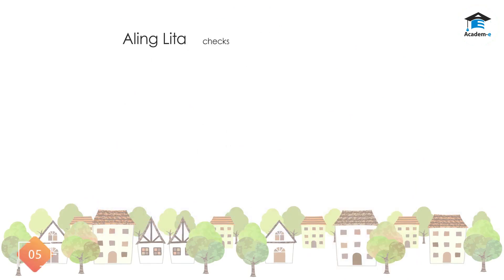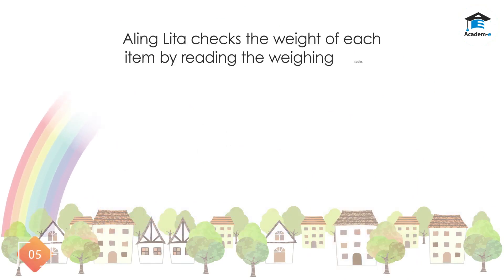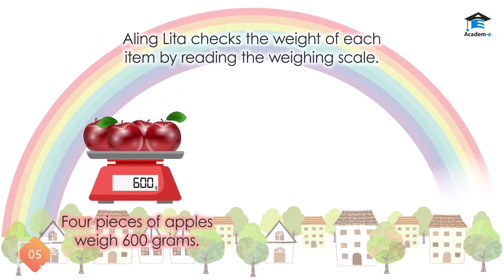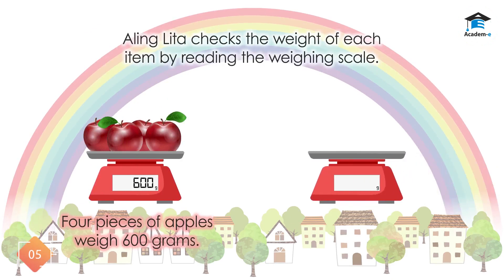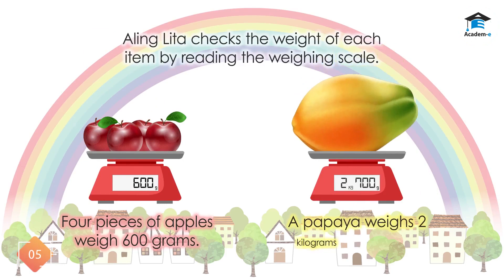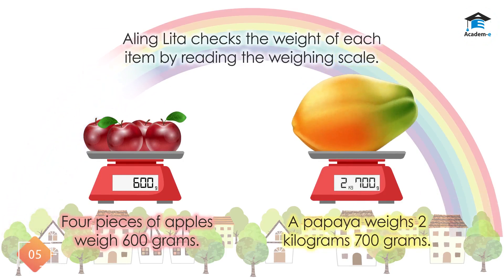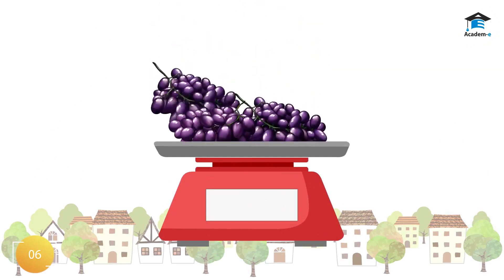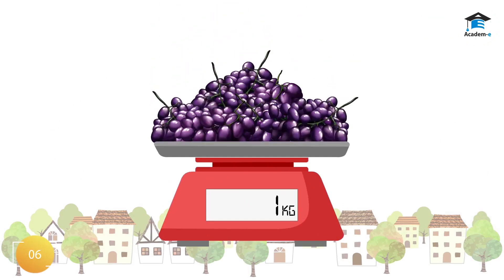A Ling Lita checks the weight of each item by reading the weighing scale. 4 pieces of apples weigh 600 grams. A papaya weighs 2 kilograms and 700 grams. A bunch of grapes weighs 1 kilogram, or simply 1 kilo.